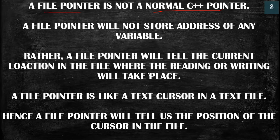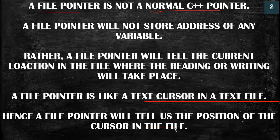A file pointer is like a text cursor in a text file. In a text file we have a blinking cursor that tells us the current location where we are writing. In the same way, a file pointer has the same functionality — it tells us the exact position of the cursor in the file.